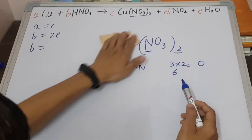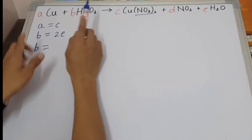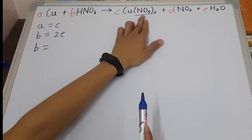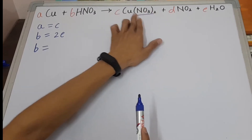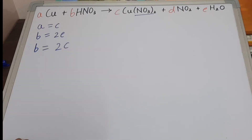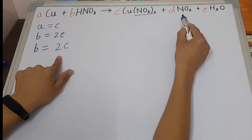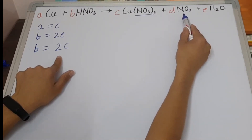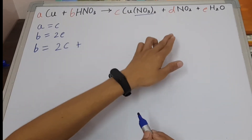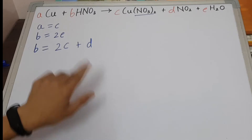So N multiplied by 2 gives us 2 nitrogen, and O3 multiplied by 2 gives us 6 oxygen. Now nitrogen on the reactant side — we have only 1 nitrogen, B is the coefficient. On the product side, 2 nitrogen and C is the coefficient, so 2C. But that's not all — we again have nitrogen here, so we put a plus sign, and then 1 nitrogen with coefficient B.